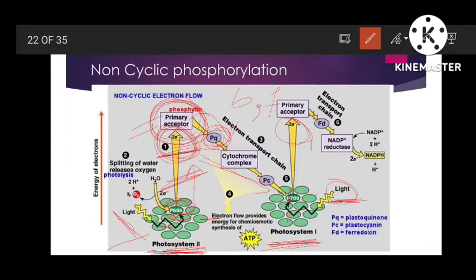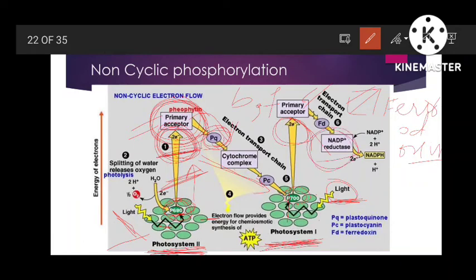The electron excited from photosystem 1 is accepted by the primary acceptor of the P700 reaction center. This primary acceptor transfers that electron through another electron transport chain, which includes ferredoxin. Photosystem 1 is associated with an enzyme NADP reductase, whose function is to produce NADPH.